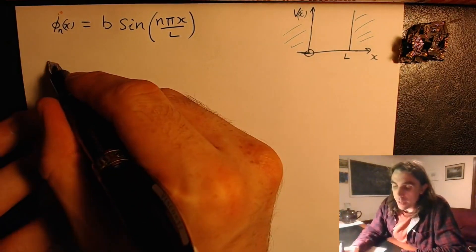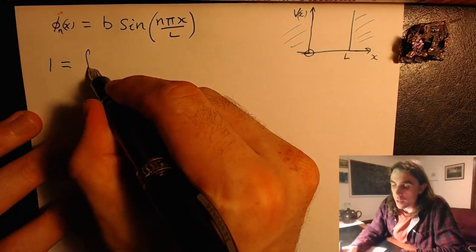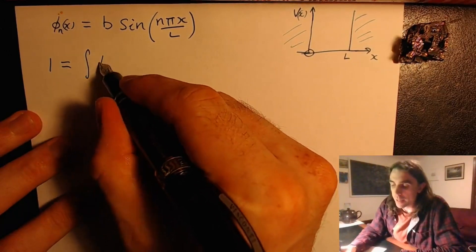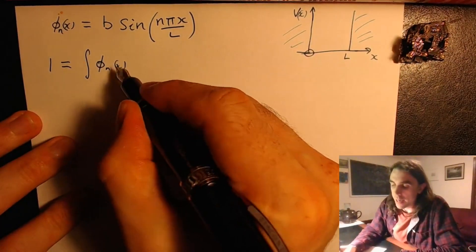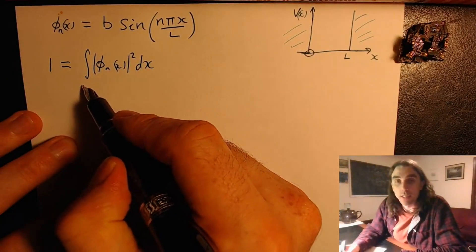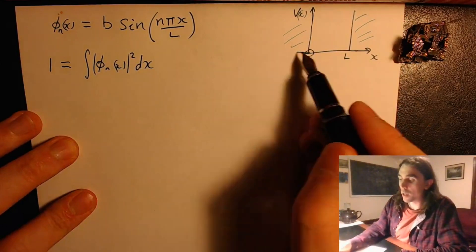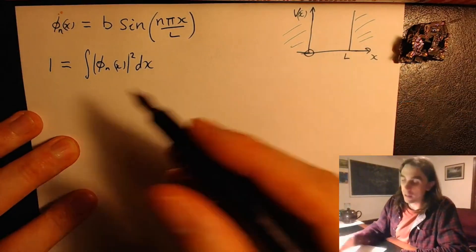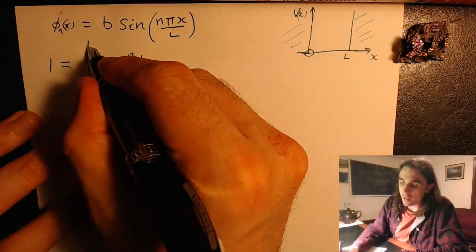So the condition we have is that 1 has to equal the integral of the probability density, which is given by phi n x modulus squared. We integrate from minus infinity to infinity, but the wave function is 0 everywhere except for 0 to l, so we can just integrate over 0 to l.